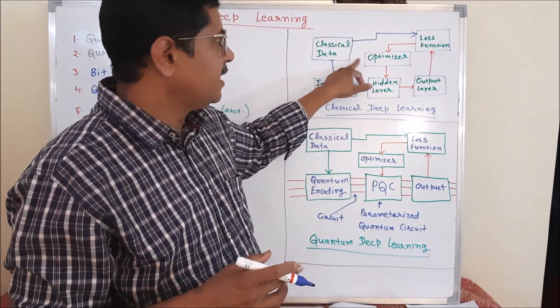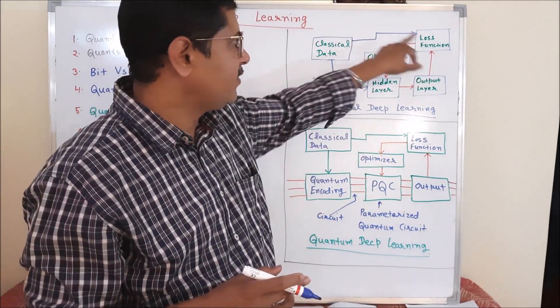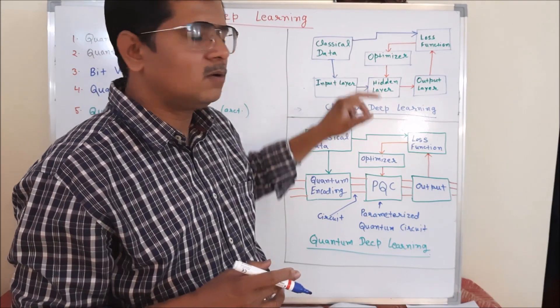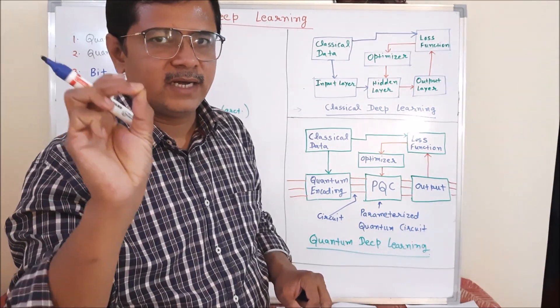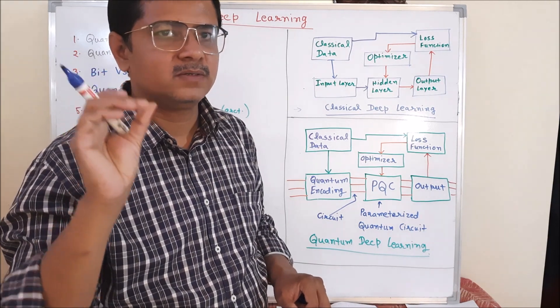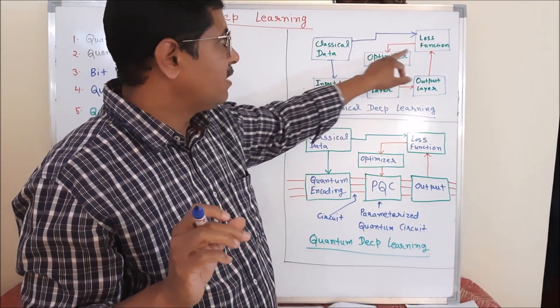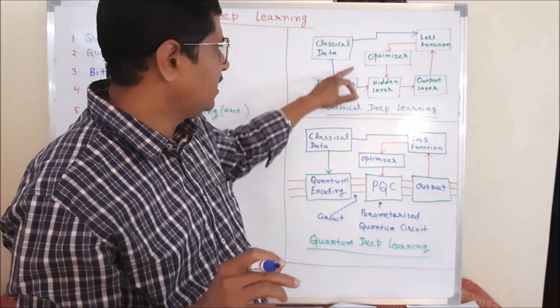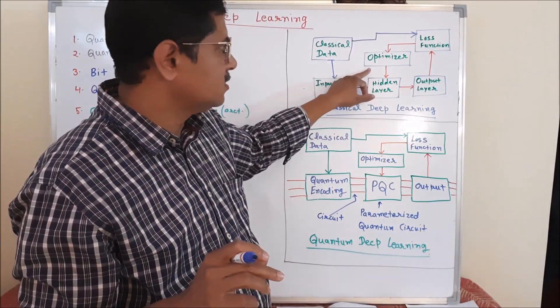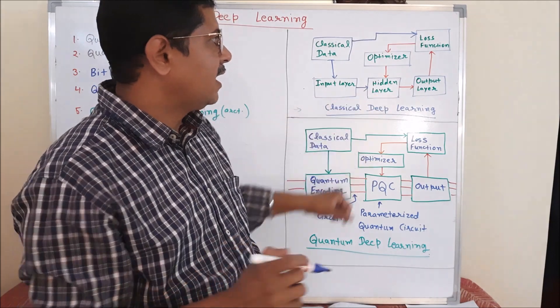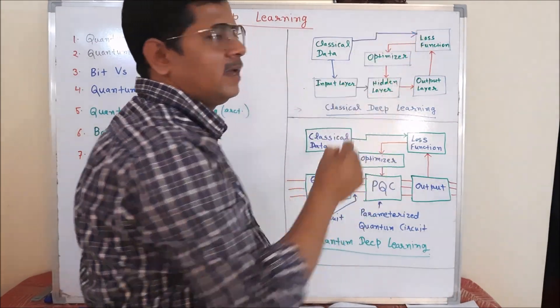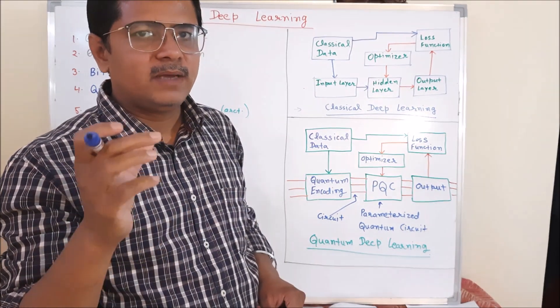And then it comes optimizer. When we train the classical deep learning architecture, the role of optimizer is to identify weight or parameter values so that we can minimize the loss between actual and predicted during the training. And it passes those information to hidden layer.